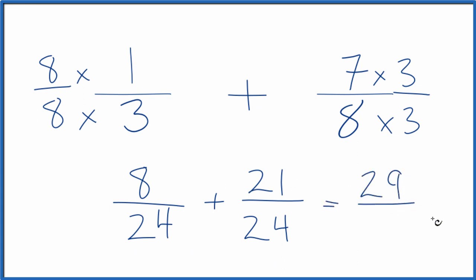And then when we add fractions, we just bring the denominator across if it's the same. So 24 right there. One third plus seven eighths equals 29 24ths. This is an improper fraction because 29 is bigger than 24. So we could change it to a mixed number.